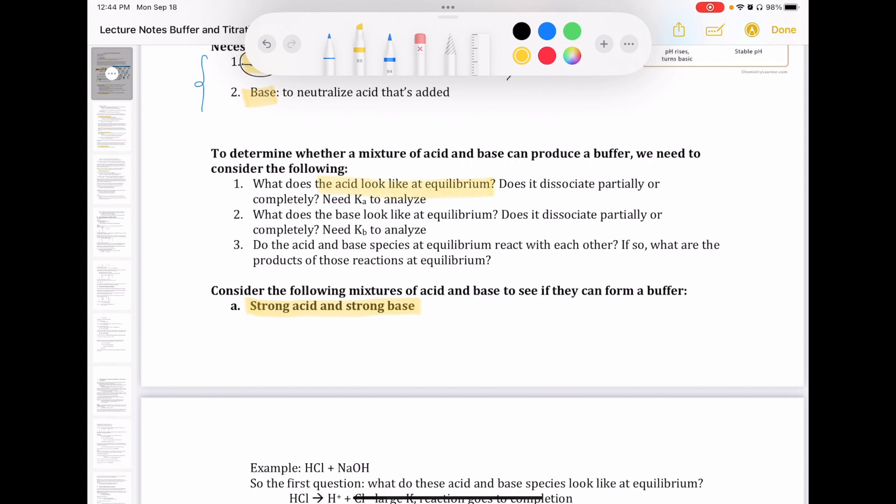Remember that if we have a strong acid, they dissociate completely because they have a large K value. If we have a weak acid, they dissociate partially. So most of the species stays as the molecular form of the acid. So we're going to need to look at the Ka value and to remember some of the list of strong and weak acids that we looked at in the previous chapter. We're going to ask the same question about the base. What does the base look like at equilibrium?